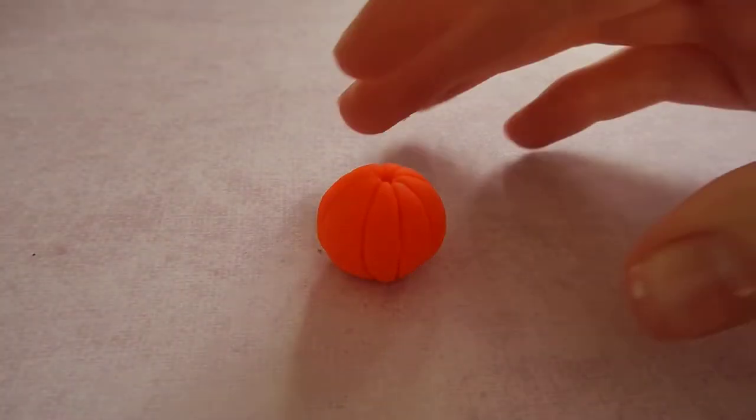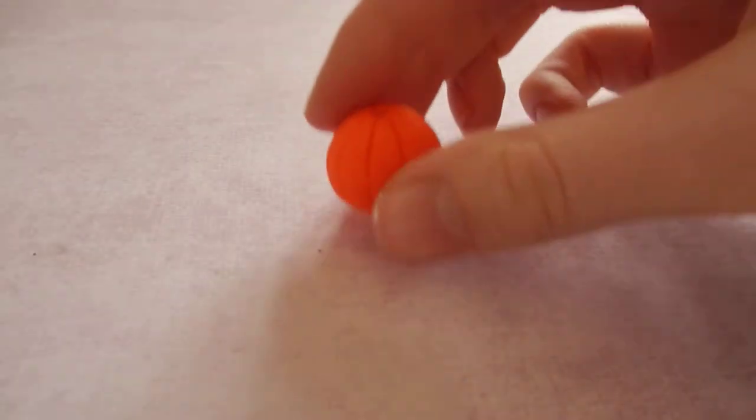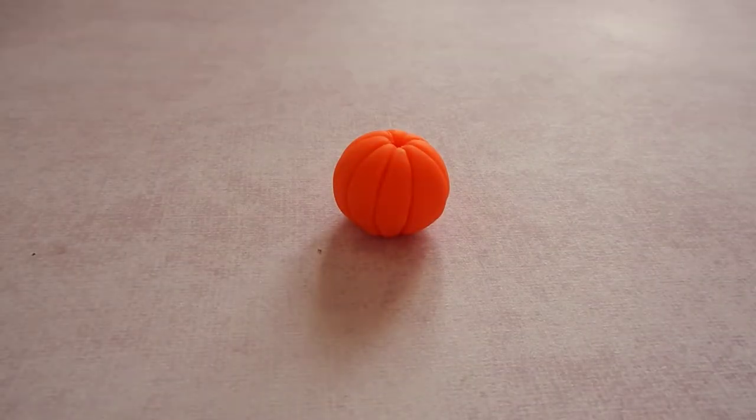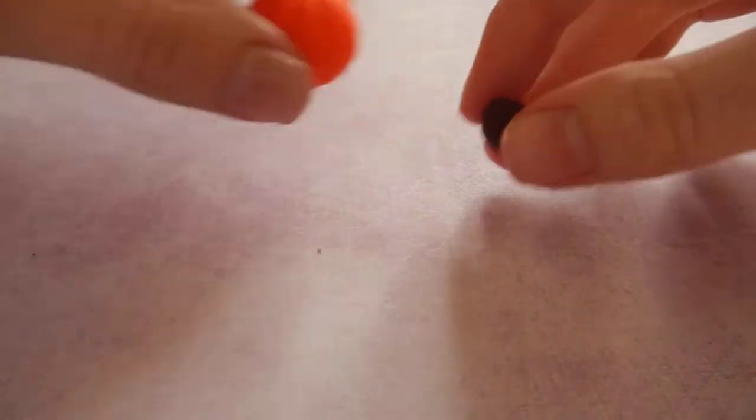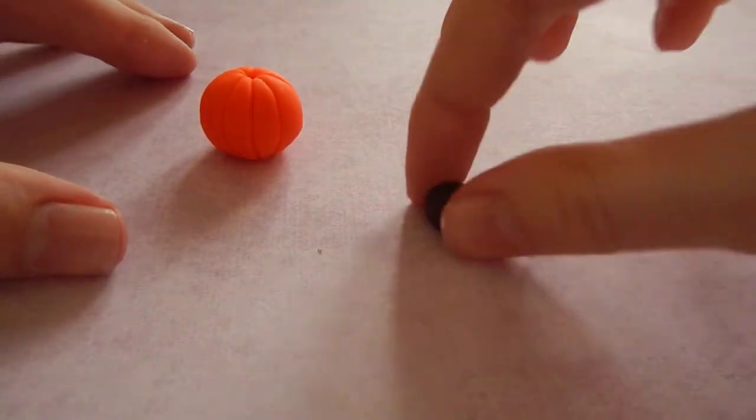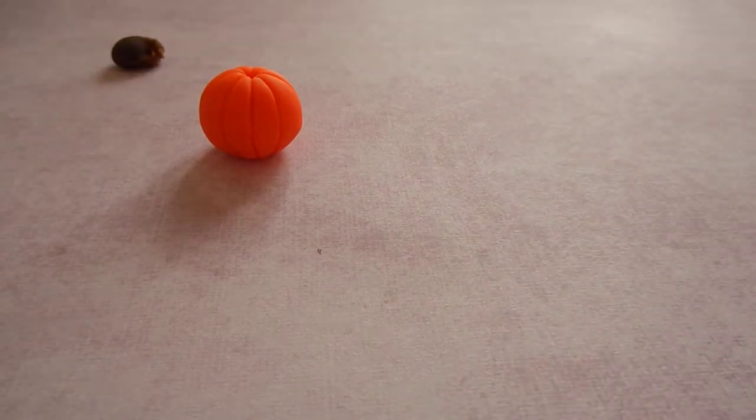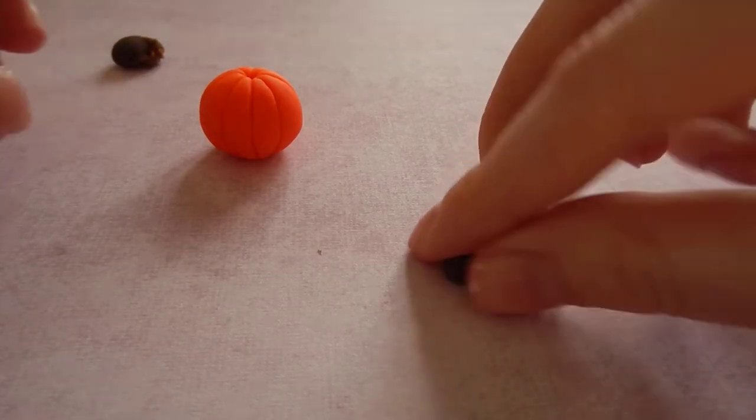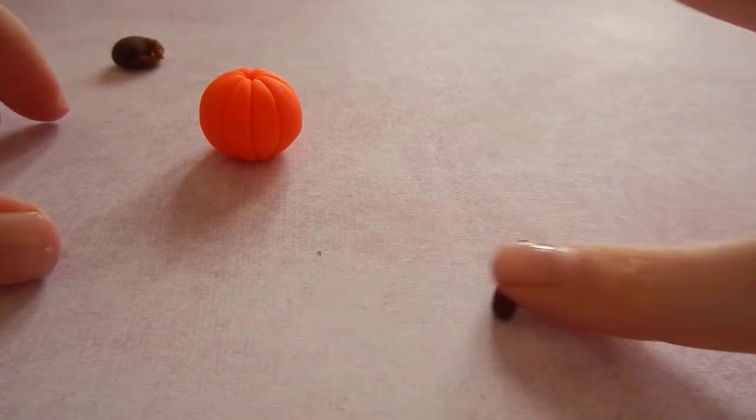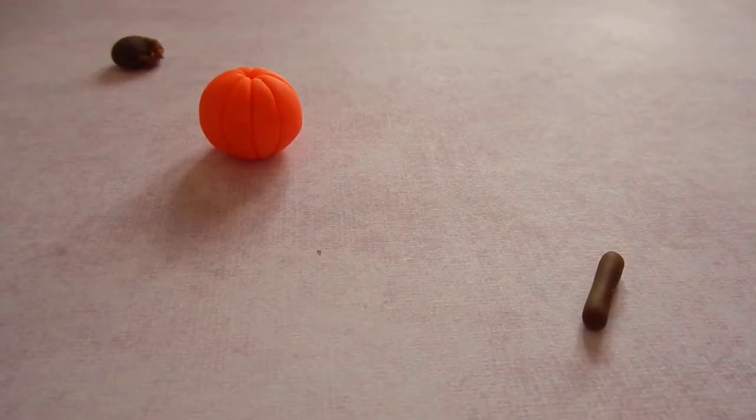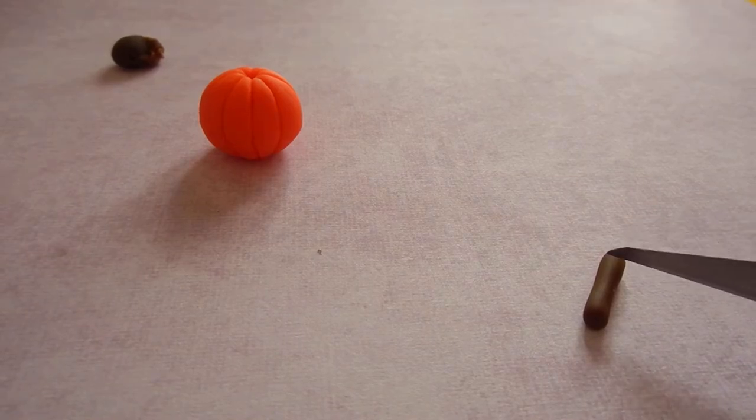So there's our pumpkin to start with. Now we're going to do the pumpkin stem, so I have some brown here, or you can use green if you like. I'm going to take a piece of that and just roll it out and chop it where you want to.